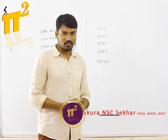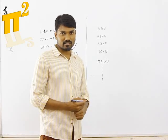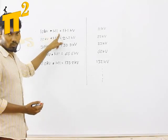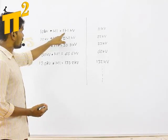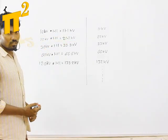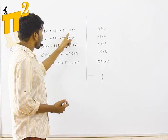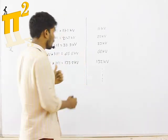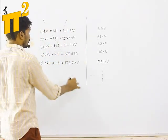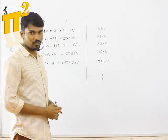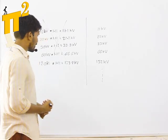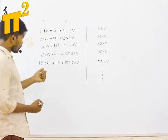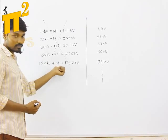Normally people say it is due to the form factor. We know for a sinusoidal wave the form factor is 1.11, so if you multiply 10 kV by 1.11 it gives 11.1 kV, which is approximately 11 kV. But this concept is actually wrong.